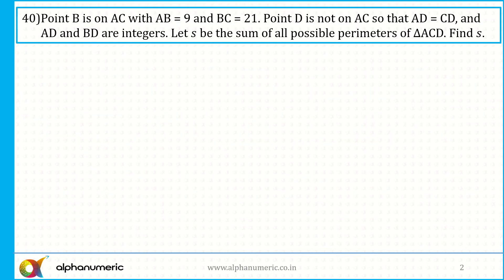The first question: point B is on AC. So there is a line AC with point A and point C, and somewhere there is a point B. The length of AB is equal to 9 and the length of BC is equal to 21.